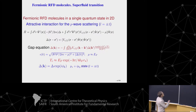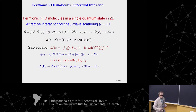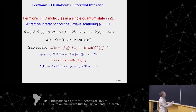Misha Baranov in his last lecture was explaining superfluid pairing between identical fermions. If there is an attraction, this is the superfluid pairing due to P-wave interaction. Assume that we have these molecules in a single quantum state in 2D; the attractive interaction for the P-wave scattering is important. This is my Hamiltonian, which contains the kinetic energy term and the interaction term. We introduce the order parameter for superfluid pairing, delta, which Misha did in his lecture: V_effective multiplied by ⟨ψψ⟩.